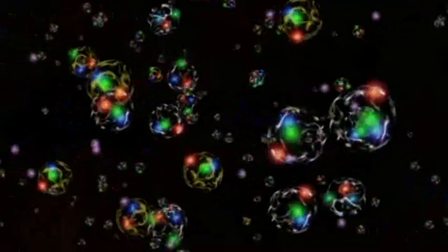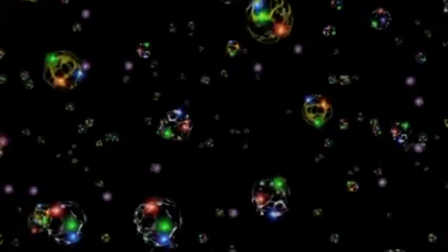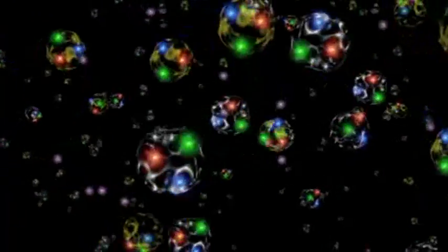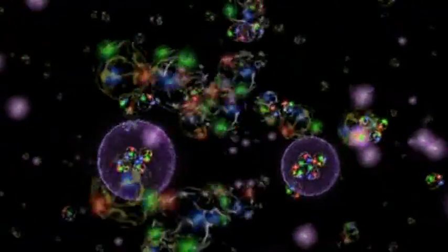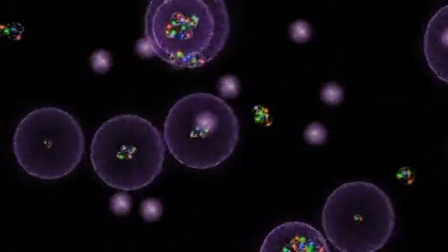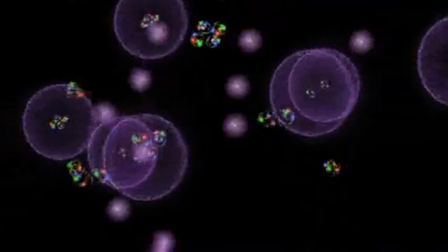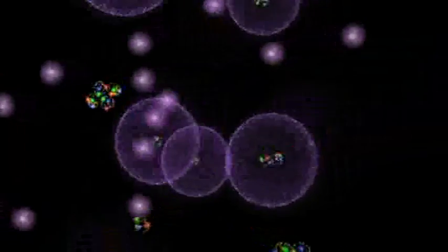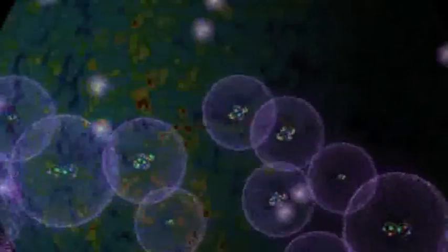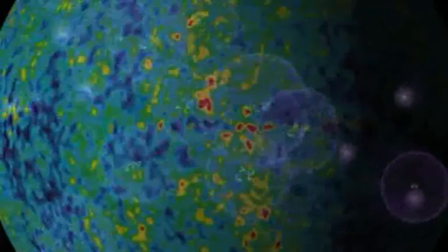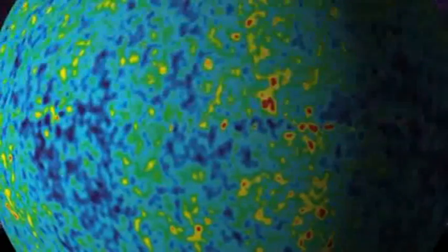After about 380,000 years of expansion and cooling, charged particles got together to form neutral atoms. And suddenly, the photons that were bumping into charged particles every second or two were free to zip unhindered across space. This is the origin of the cosmic microwave background that we see today.